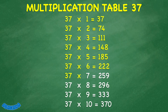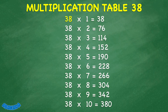37 times 7 equals 259. 37 times 8 equals 296. 37 times 9 equals 333. 37 times 10 equals 370. 38 times 1 equals 38. 38 times 2 equals 76.